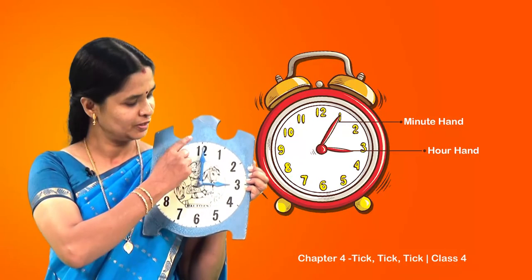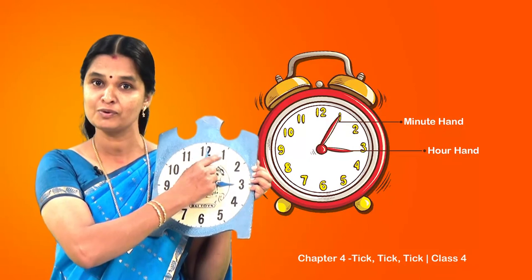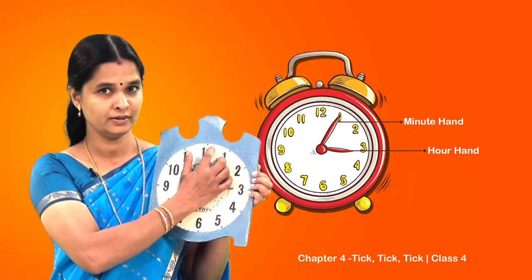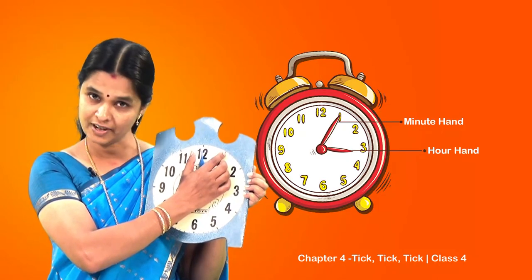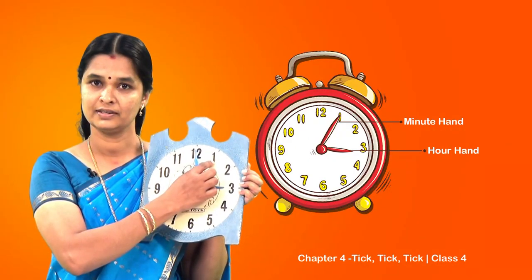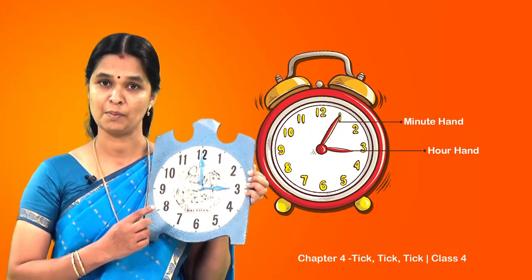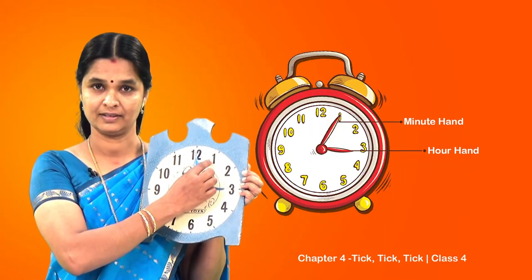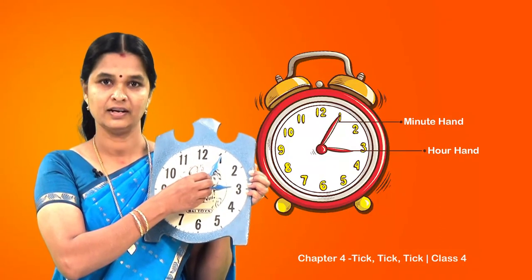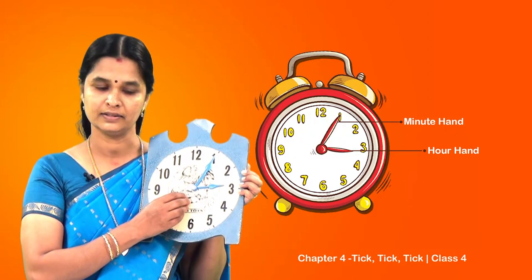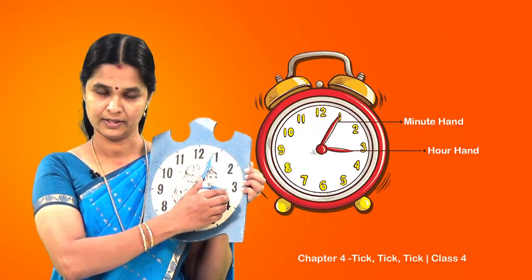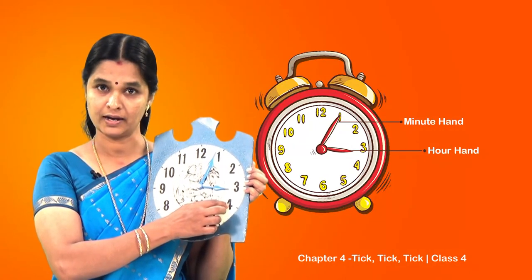As Pamposh said, when the minute hand moves from twelve to one, it actually moves across five small lines. So when the minute hand reaches one, it has actually completed five minutes. Let us see that - the minute hand is moving. Now it has reached one and the hour hand has moved a little away from three, in between three and four but close to three.